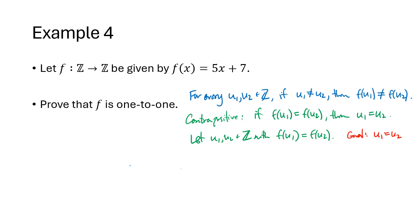So what do we know when we say that f(u1) is equal to f(u2)? We're using our formula here. Our formula is that f(x) is 5x plus 7. So this is going to be 5u1 plus 7 equals 5u2 plus 7. And now we can just do some algebra. We can subtract 7 from both sides. That gives us 5u1 equals 5u2. And then we can divide both sides by 5. And that gives us u1 equals u2 as desired. And so that's what our proof of one-to-one is going to look like. Again, it's going to use the contrapositive if f(u1) equals f(u2), then u1 equals u2.